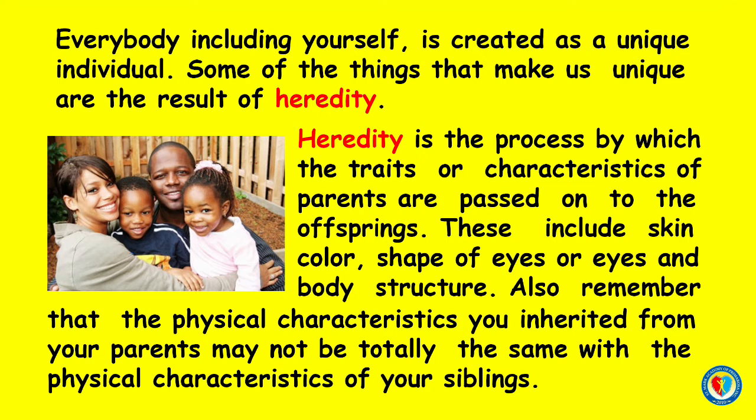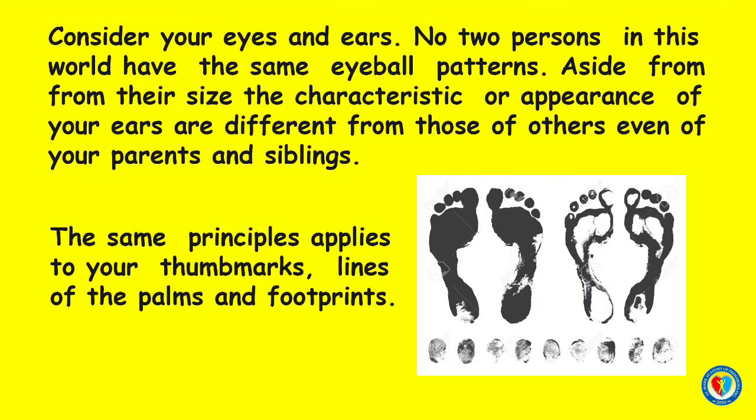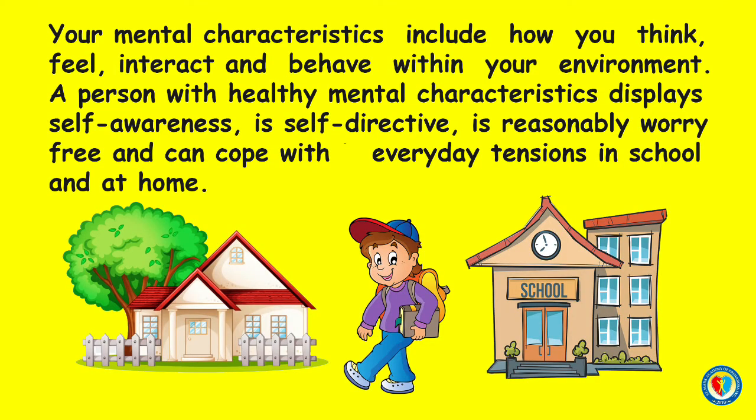These include skin color, shape of eyes, and body structure. Remember that the physical characteristics you inherited from your parents may not be totally the same as those of your siblings. Consider your eyes and ears — no two persons in this world have the same eyeball patterns. The characteristics of your ears are different from those of others, even your parents or siblings. The same principle applies to your tongue marks, lines of the palms, and footprints.